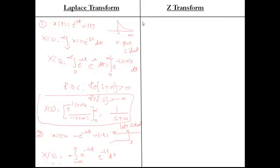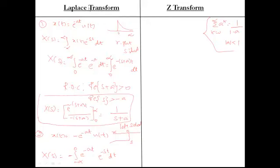In Z-transform, you need to remember one key equation: the summation of A^k from k=0 to ∞ equals 1/(1−A), provided that the modulus of A is less than 1. We will use this equation for finding Z-transforms.